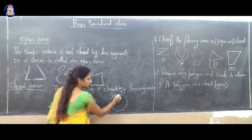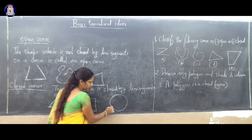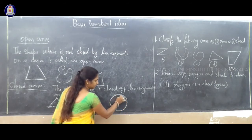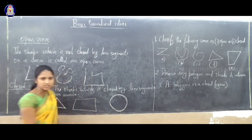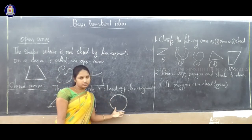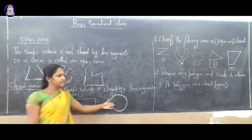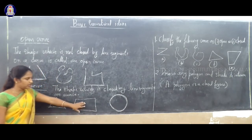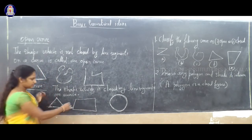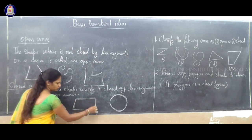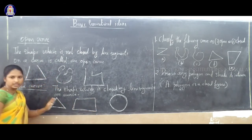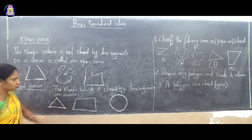Closed curve means here we did not use any line segment — just a curve. So this is the example of a closed curve: a circle. This is a closed curve and this is a closed figure because the line segments are closing — 1, 2, 3, 4 line segments. Three line segments joined give you a closed figure.